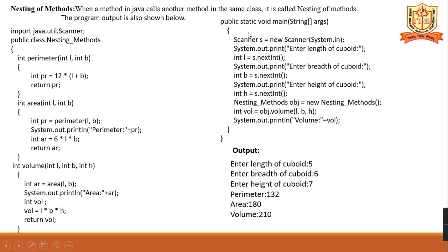The constructor with parameters is called a parameterized constructor. Next is nesting of methods. When a method in Java calls another method in the same class, it is called nesting of methods. In this example, we have a parameter method, an area method that calls the parameter method, and a volume method that calls the area method. So that is called nesting of methods — a Java class method calling another method in the same class.